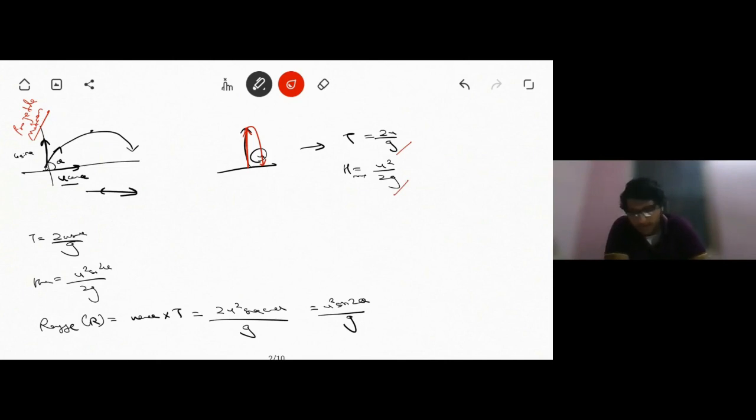Projectile motion is basically a combination of two motions: one vertical motion where the velocity is u sine theta, and a horizontal motion where the velocity is u cos theta. Instead of just 2u by g, we will have 2u sine theta by g, and we substitute sine theta here as well. Range refers to the total distance covered in the horizontal direction throughout the time of flight, so that is given by u cos theta into t, which gives us this formula.